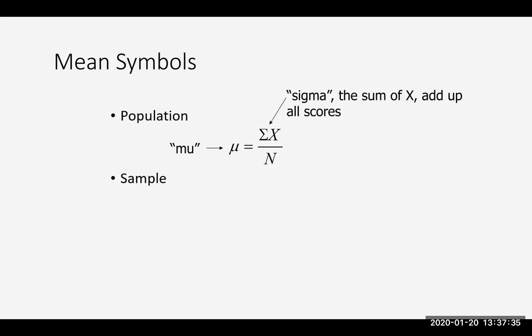And so we would take the sum of all of our scores. So this fancy little E-looking thing, that's a sigma. That means sum up everything that comes after it. And so in this case, we're going to call those X scores. Everybody that we look at has an X score.